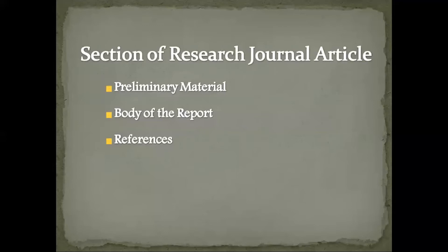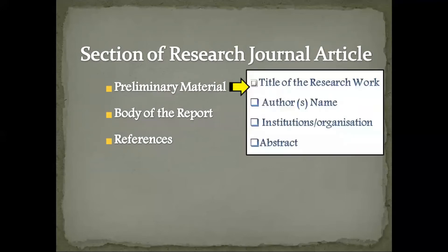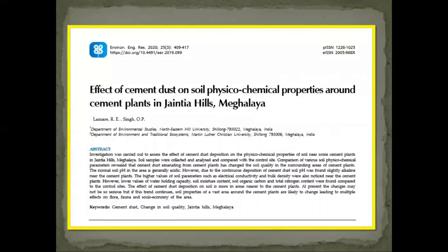Any research journal article constitutes three main sections: the preliminary material, the body of the report, and the references. Preliminary material in a research journal article includes information such as the title of the research work, the author's name, and the institution or organization from where the research was carried out.